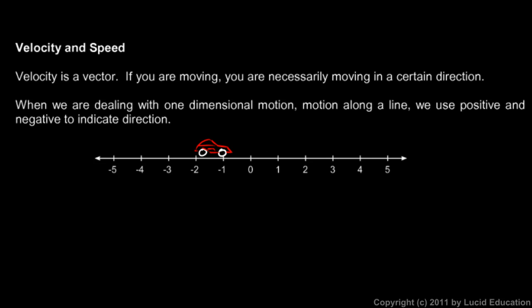When we deal with the motion of the car, we usually use positive and negative to indicate the direction. You could use north or south or forward-backward or left-right, but it's very common mathematically to set up a number line like this, and one direction is positive and the other direction is negative.